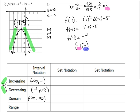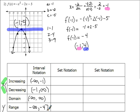Looking at the left side of the vertex at x = -1, the graph slopes upward, so the function is increasing on (-∞, -1). On the right side, the graph slopes downward, so it's decreasing on (-1, +∞). For the range, it deals with the y-coordinate of the vertex, which is -4. Since the parabola opens down, the range is (-∞, -4], using a hard bracket on -4 because it's included. Infinity always gets a soft bracket.